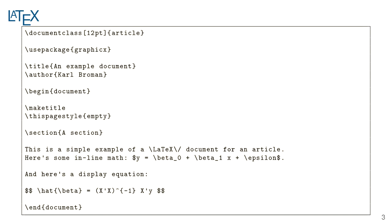Every LaTeX document starts with backslash document class, and things in brackets or braces are the main way you mark up documents in LaTeX. Different document classes exist — this one is an article. The document will also have a begin document and end document where the paper actually sits, and ideally the document focuses on the semantics of the article rather than the style.